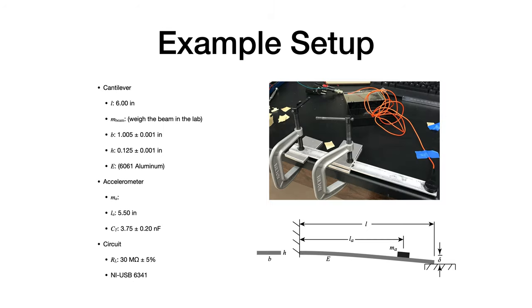Here's an example setup we might have in the lab. We might set it up so that the cantilever is about six inches long. You'd have to weigh the beam to get an estimate of how much the beam weighs. The cross-sectional dimensions of the beam are a base of about one inch and a height of about an eighth of an inch. The material for the beam is 6061 aluminum, so the modulus of elasticity could be looked up. The mass of the accelerometer is kind of hard to find because it's got that cable attached to it.